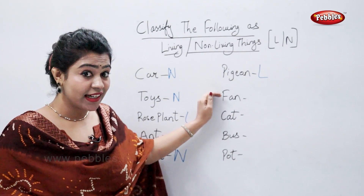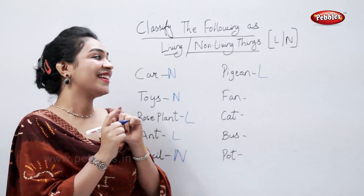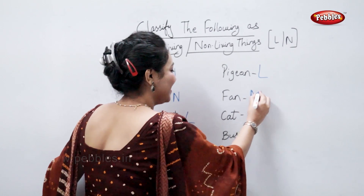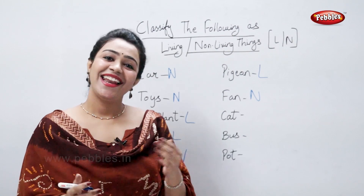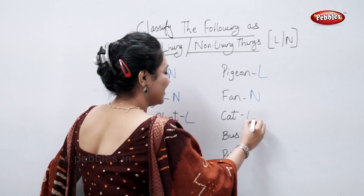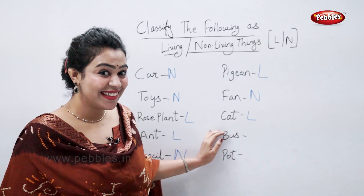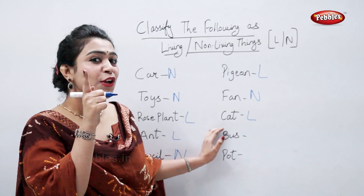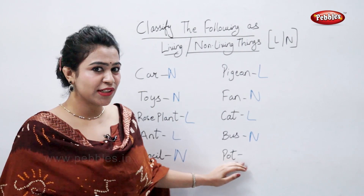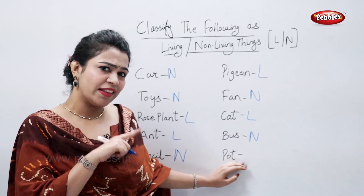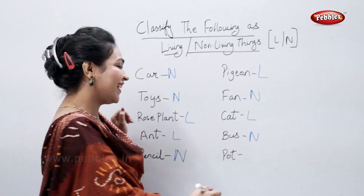Fan. Fan is a non-living thing. Cat. Cat is a living thing. Bus is a non-living thing. And pot — pot is a non-living thing.